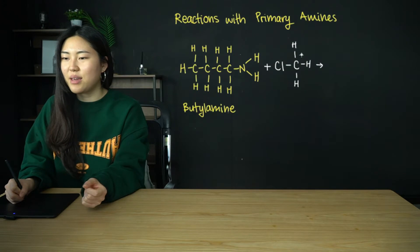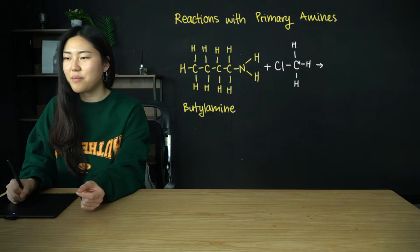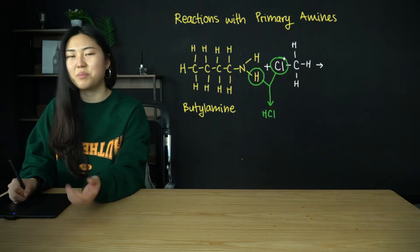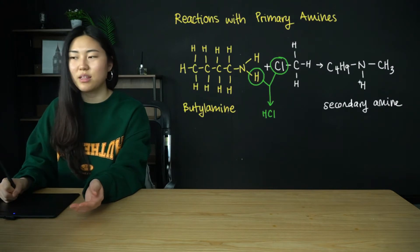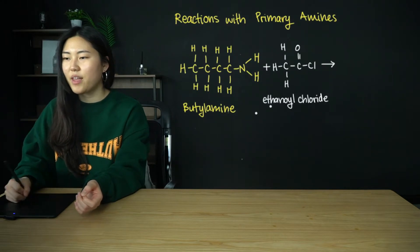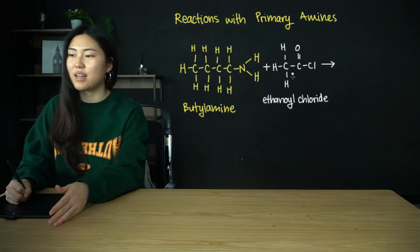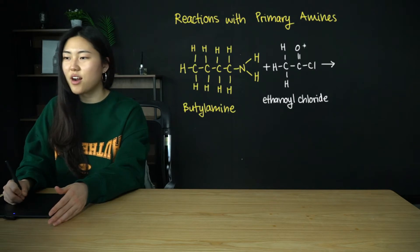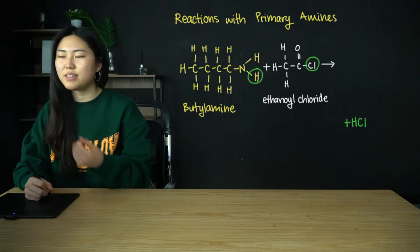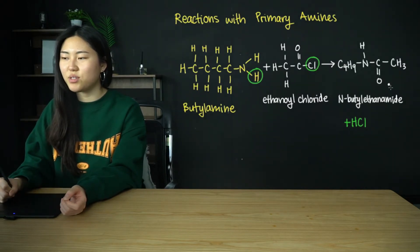Now let's look at primary amines reacting with a primary halogenoalkane. Here we have chloromethane reacting with butylamine — the H and Cl are removed and we get a secondary amine with the butyl group and the methyl group. Next we have ethanoyl chloride, which is an acyl chloride (note the carbon double bond O with the Cl). A condensation reaction occurs, removing the HCl molecule, and you get N-butyl ethanamide.